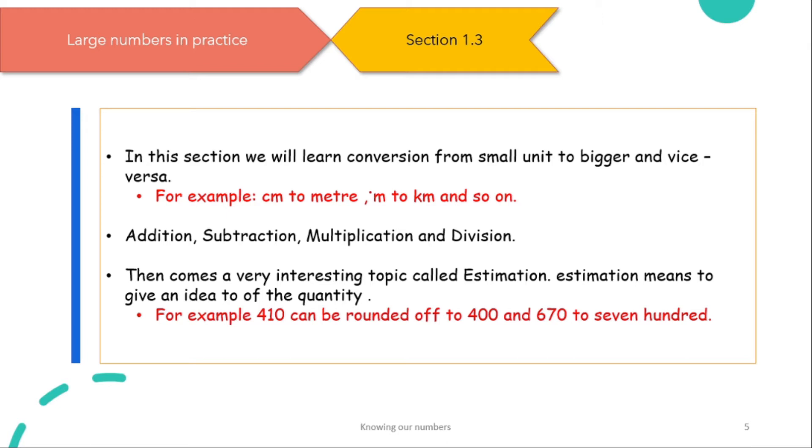Because if you round 410 to 500, it doesn't make sense. Because 500 is like really far from 400. And same is with 670. If we round it off to 600, it would be better if we round it off to 700. Because 700 is closer to 670 than 600.